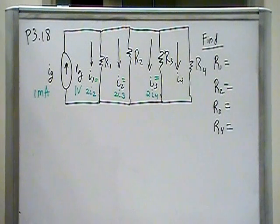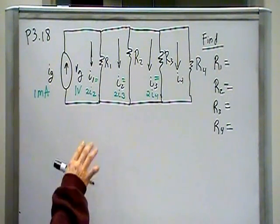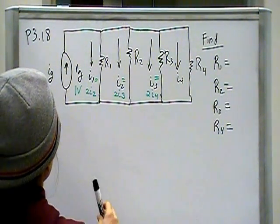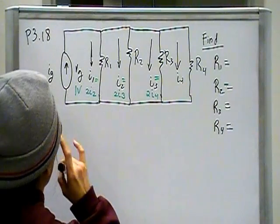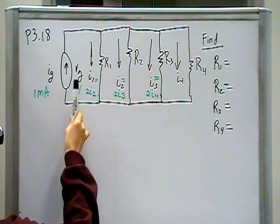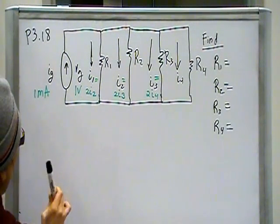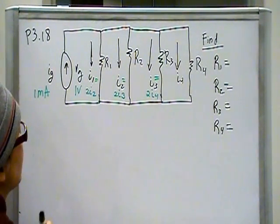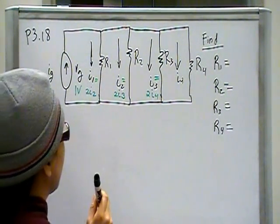This section is on current division and voltage division. This problem is a design problem. We want to design a circuit with four resistors in parallel, and we want to find what resistor values will give us this type of design. The source voltage is going to be 1 volt, the source current is 1 milliamp, and the current needs to split in this way.